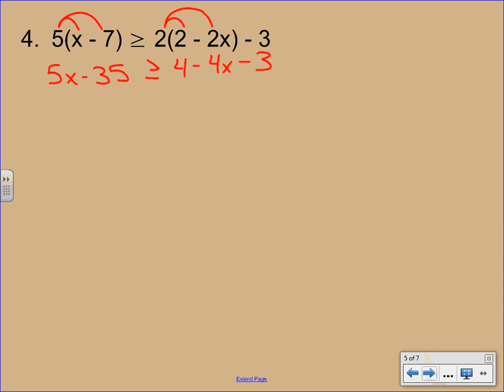Now we've got to work on combining some like terms here on the right hand side. If you combine that 4 and the negative 3, that'll give us the 1. And it doesn't really matter the order. You can write 1 minus 4x or you could write negative 4x plus 1 either way. Everything else will come down. And now we have to work on getting all the variables over to the left. So we have a minus 4x. We're going to add 4x to both sides.